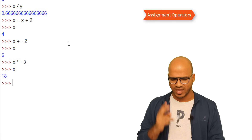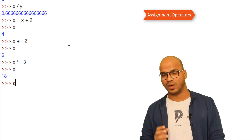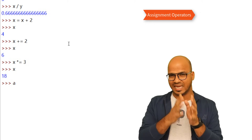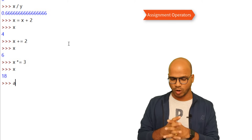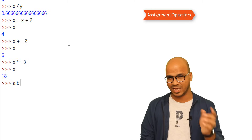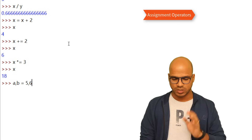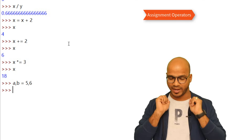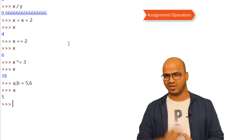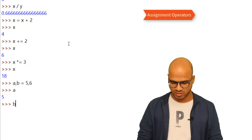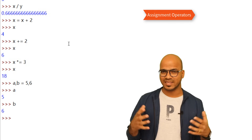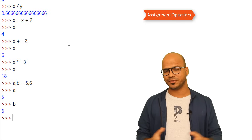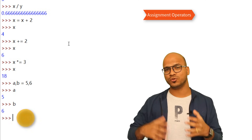We can also do multi-variable assignment in one line. Instead of writing a equal to 5 and b equal to 6 on separate lines, you can write a comma b equal to 5 comma 6. Fetching a gives 5, fetching b gives 6. That's how you assign values to two variables in one line.